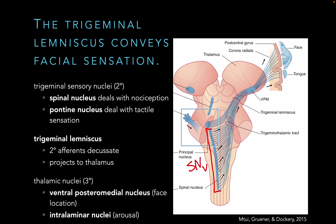Tactile sensation from A-beta fibers arrives at the pontine nucleus. Both of these cross over in the trigeminal lemniscus — just like the posterior column medial lemniscus pathway and the spinothalamic tract, the secondary afferents cross over, hitting the tertiary afferents in the thalamus. The thalamic target is slightly different: not the ventral posterior lateral nucleus, which is for the body, but the ventral posterior medial nucleus, which is for the face. We have a body map here — the face is in the medial parts, and the rest of the body is spread out in the lateral portion.